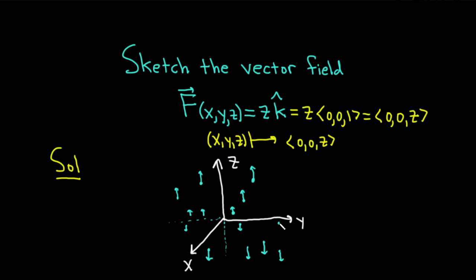Up here, it would be smaller again because it's a smaller z-coordinate in magnitude. Here it's somewhere in the middle. So this is a pretty good sketch, a rough sketch, of what our vector field would look like.